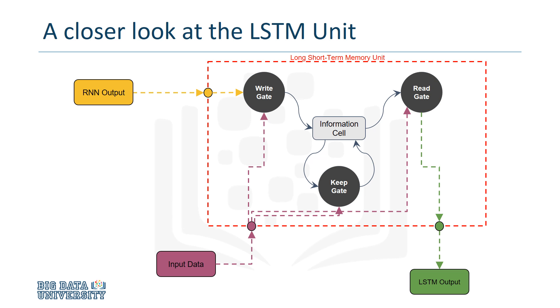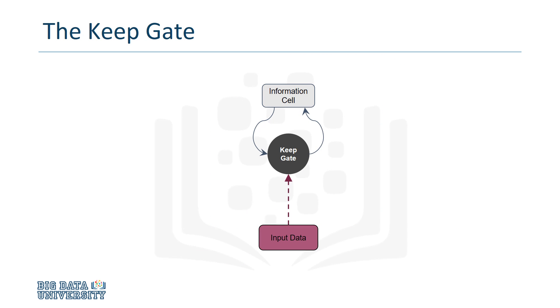For now, let's just focus on the individual gates themselves. The keep gate is responsible for maintaining the data in the information cell. It receives the same input data and state as the network, and then it calculates how much of the current data should be remembered.